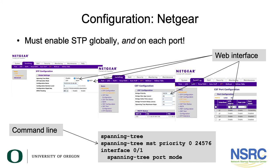For NetGear, you must enable STP globally and on each port, similar to Juniper. From the web interface, go to spanning tree, click enable, click multiple spanning tree, then go to CST, set the priority, then go to ports and enable spanning tree on each port. On the command line, say 'spanning tree' then 'spanning tree mst priority 0' — where 0 is the main instance — and set the spanning tree priority, in this case to 24k. Then on the interface, say 'spanning tree port mode' to enable spanning tree on that port.